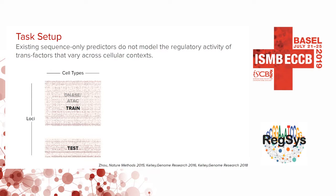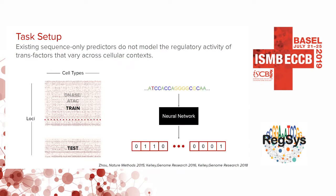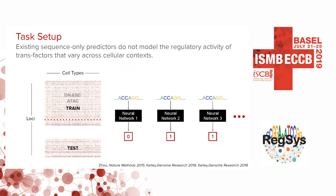Sequence-only models come in two flavors: one that maps sequence to chromatin accessibility across all cell types, and one with multiple models, one per cell type. A key caveat is that these models cannot make predictions in cellular contexts outside their training data, which limits their applicability and usability.